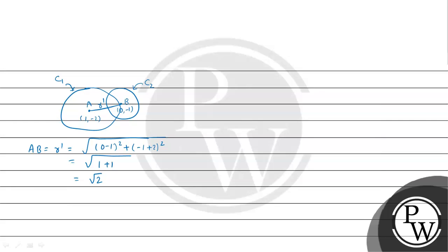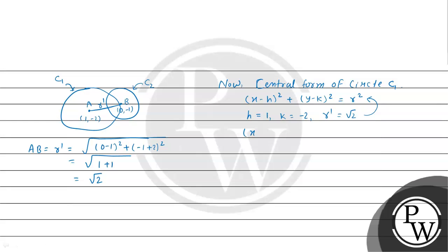So the radius of C1 is found to be √2, and the center is already known as (1, −2). Now applying the central form of the circle, (x − h) squared plus (y − k) squared equals r squared, with h equals 1, k equals −2, and r equals √2, we get (x − 1) squared plus (y + 2) squared equals 2. Expanding this gives the required equation of the circle.